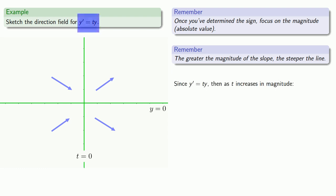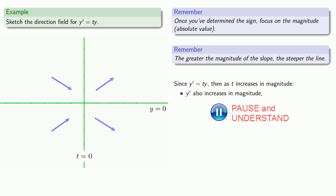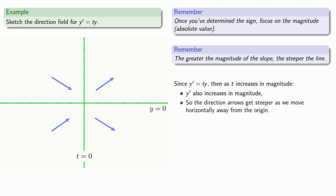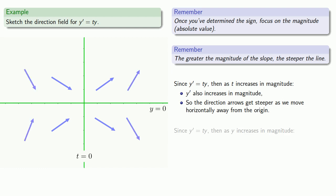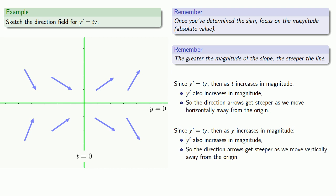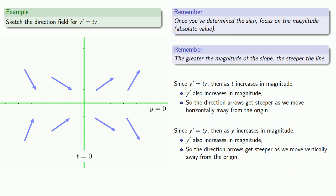Since y' = ty, as t increases in magnitude, y' also increases in magnitude. This means the direction arrows get steeper as we move horizontally away from the origin. Similarly, as y increases in magnitude, y' also increases in magnitude, so the direction arrows get steeper as we move vertically away from the origin. The further away from the origin, the steeper we should draw those arrows.